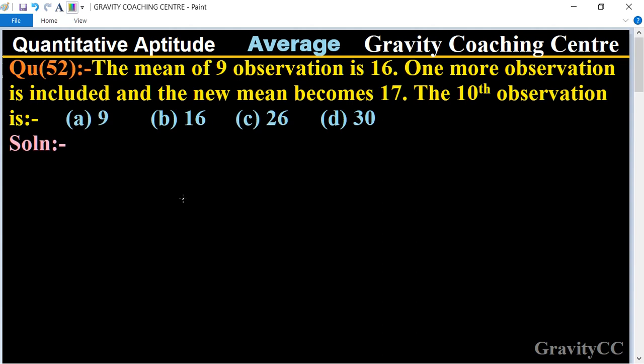So in this question, we have nine observations with an average of 16, and if we add one number to make it 10 observations, then the average is 17.